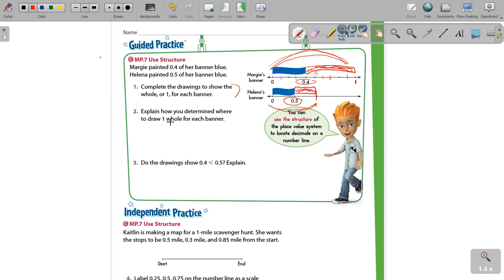Okay, so now for this one, they want you to explain, which means they want you to write. They want you to talk about how you determined where to draw the whole for each banner. Now for me, I looked at it and I said, well, 0.5 is half, so that means that Helena's got half of her banner painted blue already. So I knew that that meant that whatever was left was going to be another half, another 0.5.